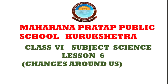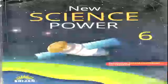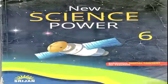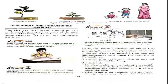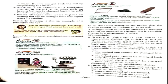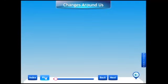Good morning students. Welcome to e-learning class of science. Today we are going to start chapter 6, that is changes around us. Today in this chapter you will be able to learn about types of changes — reversible and irreversible changes. Let us start changes around us.